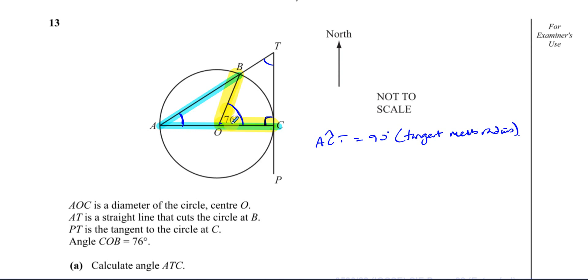But BOC is at the center of the circle. BAC is at the circumference. So we can say that BAC is equal to a half of BOC.